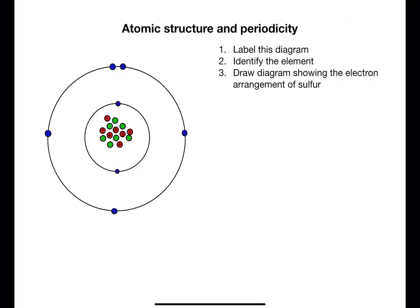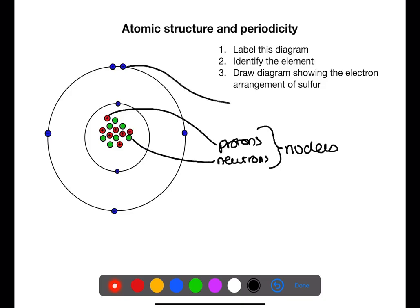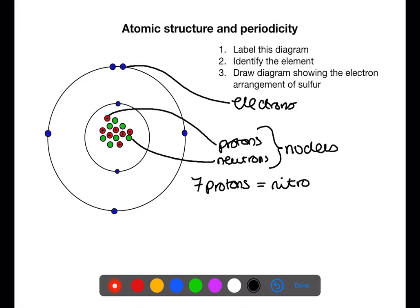identify the element and then draw a diagram to show the electron arrangement for sulfur. In this diagram we have protons and neutrons. Protons are positive and neutrons have no charge, and together they make up the nucleus of the atom. We also have electrons which go around the nucleus in energy shells and are negatively charged. This atom has seven protons.